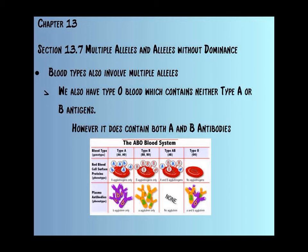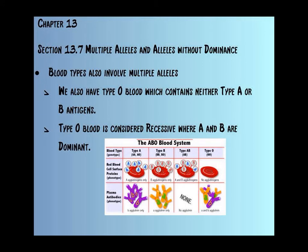Blood types are involved in multiple alleles. Type O blood contains neither type A nor type B antigens; however, it does contain both A and B antibodies. Type O blood has nothing on its surface to say it is either type A or type B — that's why we call it type O, it has no antigens. So if you had type O blood and I put type A blood into your body, the body would fight it off. Same thing with type B. Type O blood is considered recessive, whereas type A and B are considered dominant, and someone with AB blood is codominant.